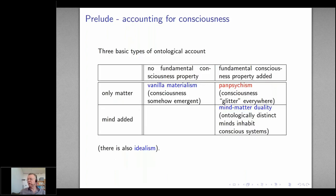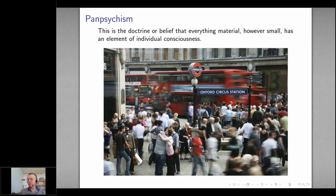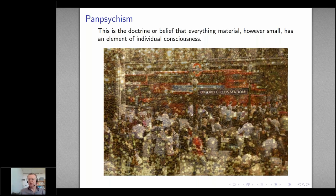The second account has only matter, but adds some fundamental consciousness-type property to it — this is panpsychism. Imagine the physical world, and in addition to the atoms making up the materialist account, there's also some kind of consciousness glitter spread throughout the whole universe. This accounts for the existence of consciousness and makes it possible. In this approach, the whole universe is in some sense endowed with the property of consciousness.